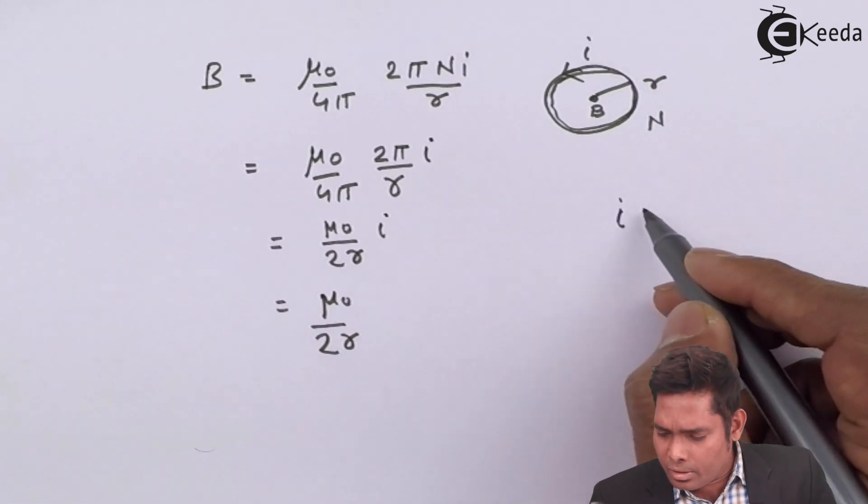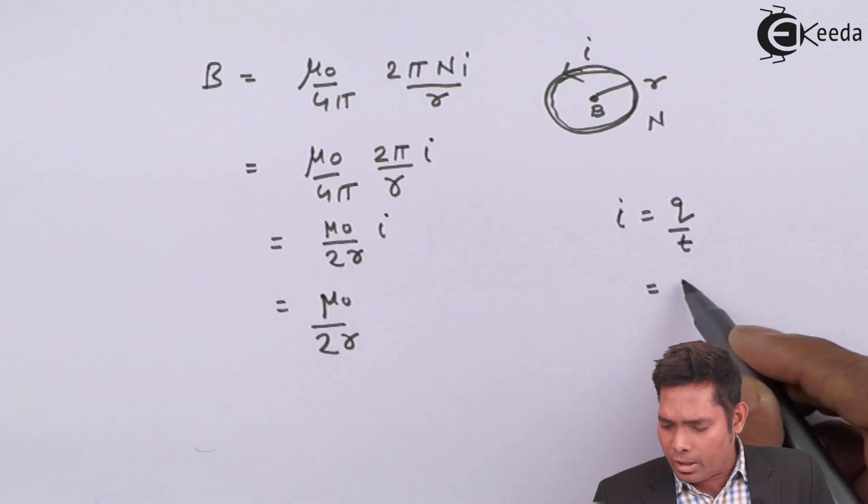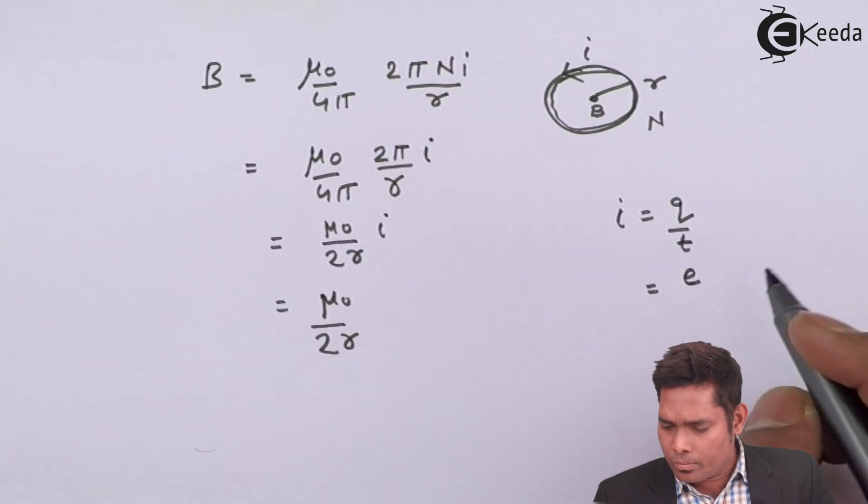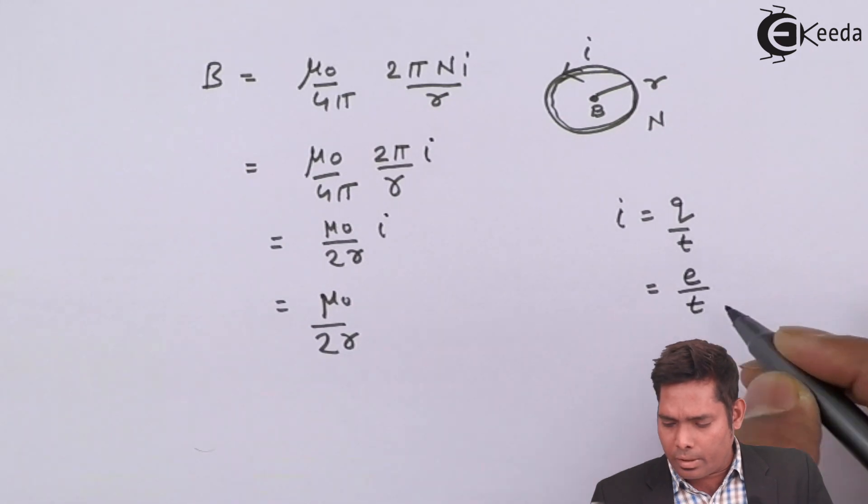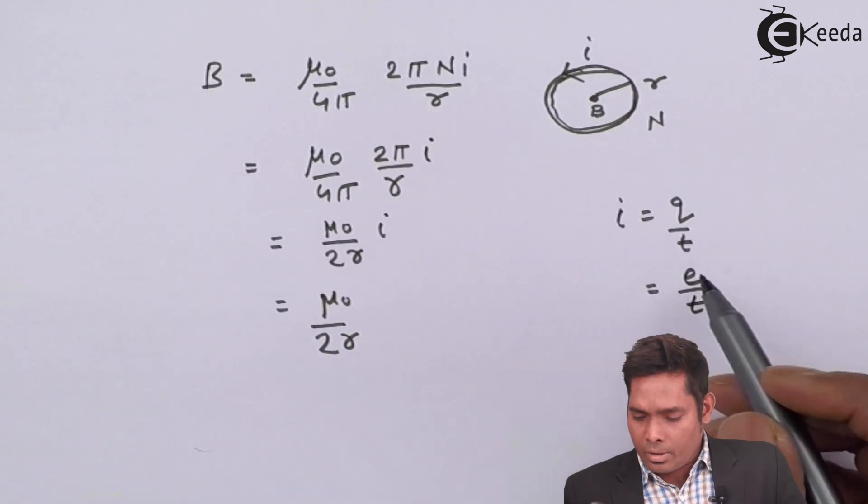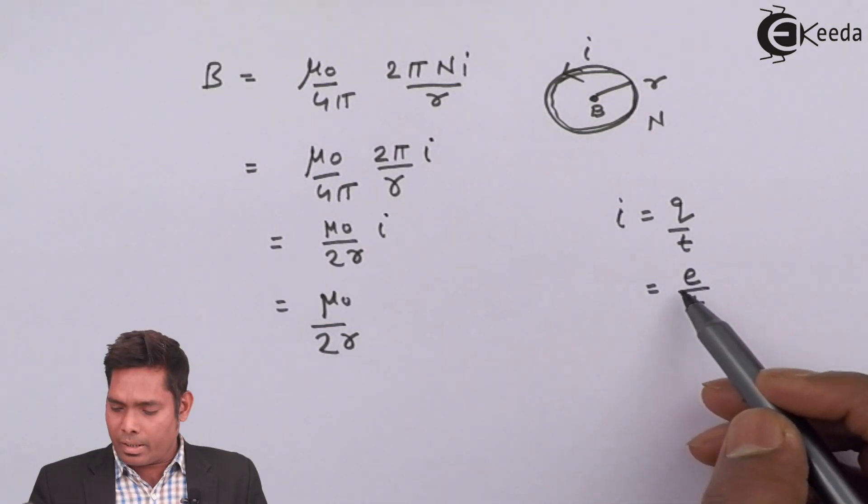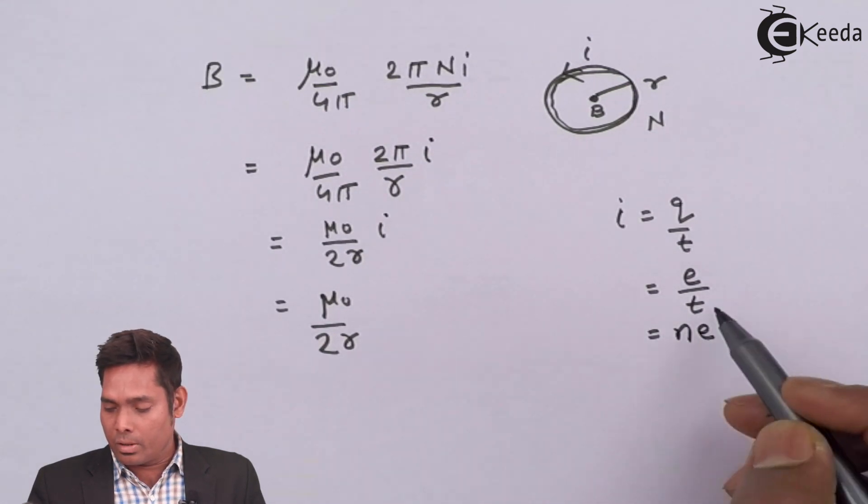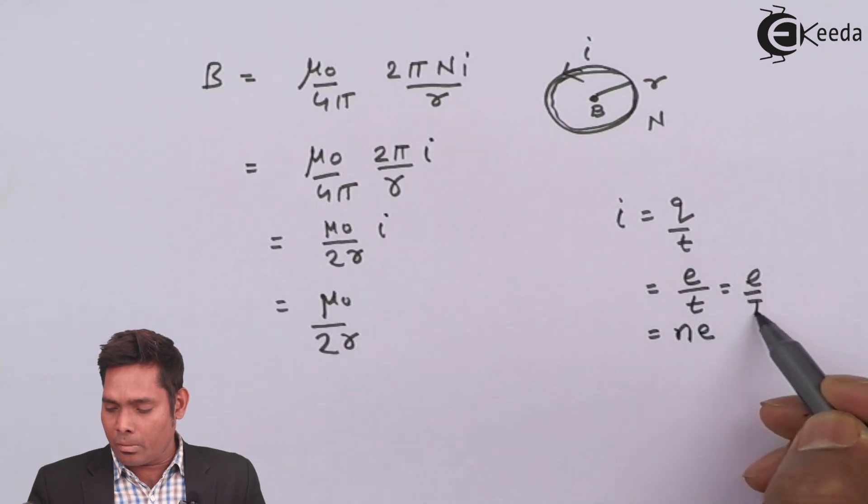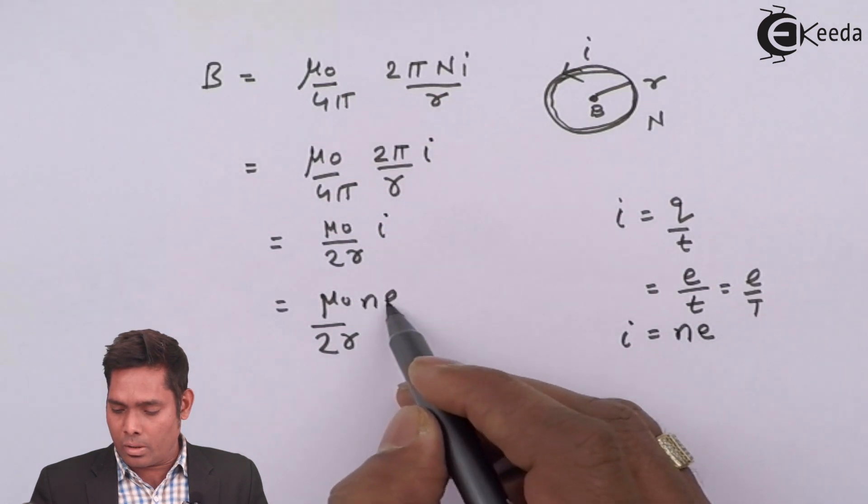What is i? i is the charge flowing q divided by t. Which is here, the electron moving per second. And that electron moving per second, 1 over second is your n. So, it will become n into frequency. In one time period, 1 by t, this will become e divided by t, and 1 by t is n. So, i is n e. I will put i is n into e.